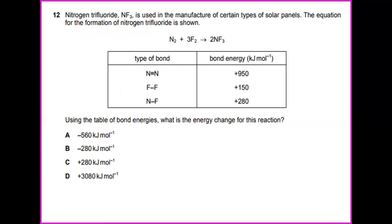Nitrogen trifluoride NF3 is used in the manufacture of certain types of solar panels. The equation for the formation of nitrogen trifluoride is N2 plus 3F2 to form 2NF3. So given the type of bond, N=N equals 950 kilojoules per mole, F-F 150, and bond N-F 280. How to calculate this? Using the table of bond energy.